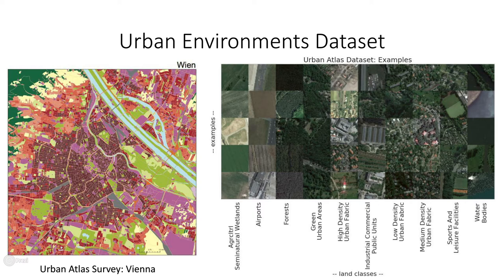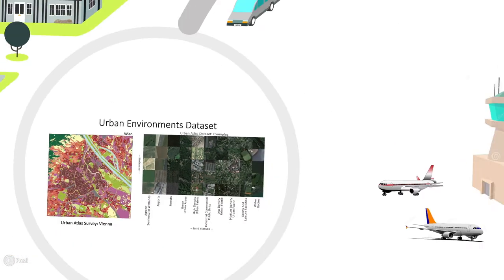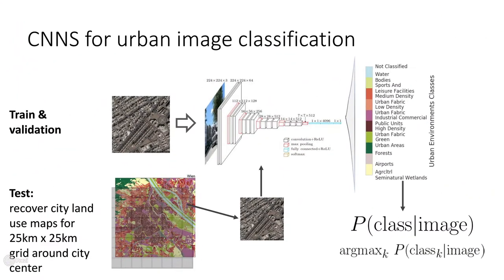To train our classifier, we use state-of-the-art convolutional architectures. The model takes as input a satellite image and computes the probability distribution over our 10 land use classes — high-density urban fabric, airports, agricultural land, and so on.